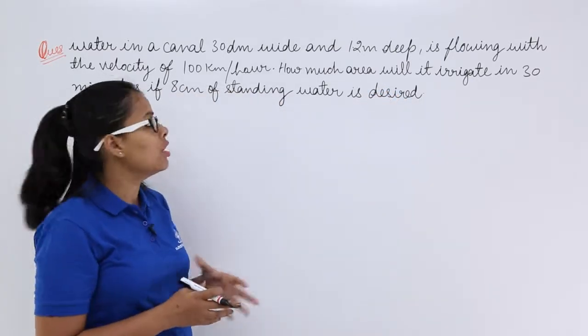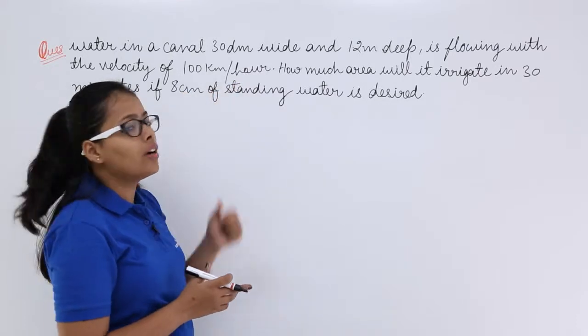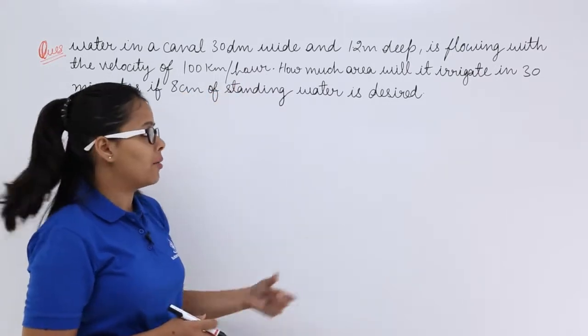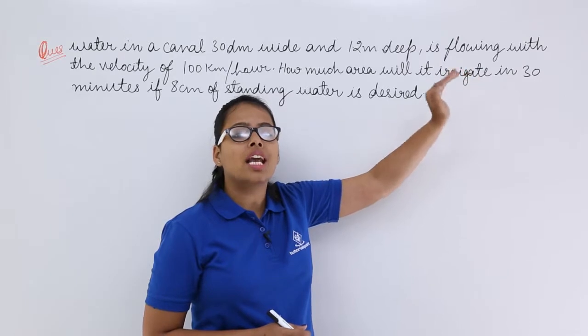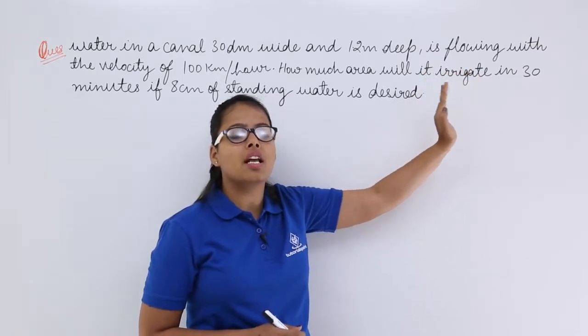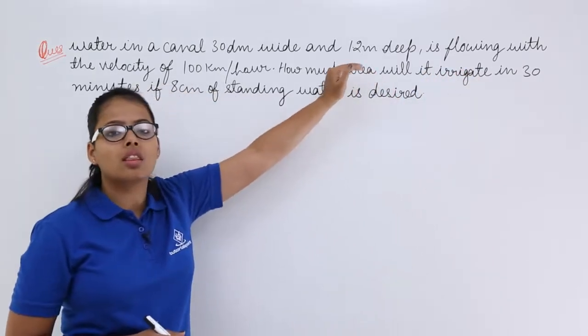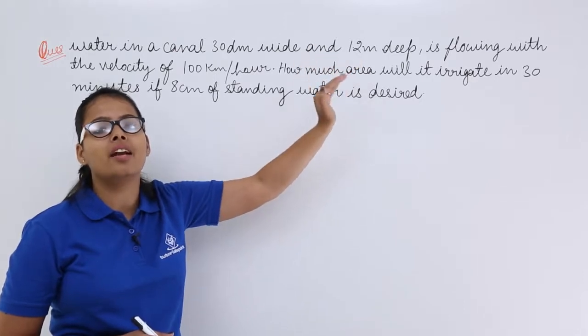You know the flow of water which is with the rate of 100 km per hour and you need to know the area or the field irrigated in 30 minutes using this volume of water contained in the canal.